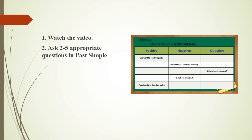For our exercise, make sentences in simple past tense. We have here positive and negative statements and the question. Number one: We went to Sandra's party. The negative sentence should be: We didn't go to Sandra's party. And for the question: Did we go to Sandra's party? The second one: The rain didn't stop this morning. The positive statement should be: The rain stopped this morning. And for the question, it should be: Did the rain stop this morning?